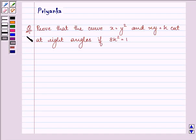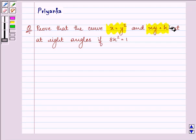Hi and how are you all today? The question says, prove that the curve x is equal to y squared and xy is equal to k cut at right angles if 8k squared is equal to 1.